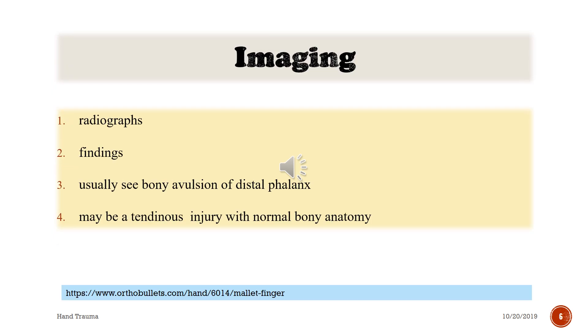For imaging, radiographs may show a bony avulsion fracture of the distal phalanx. Alternatively, there may be a tendinous injury with normal bone anatomy on imaging.